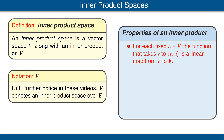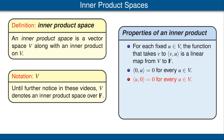Now let's look at some properties of inner product spaces. Suppose we fix a vector u in V; then the function that takes a vector in V to that vector's inner product with u is a linear map from V to F. This linearity follows from additivity and homogeneity in the first slot. Our second property says that the inner product of 0 with any vector in V is 0, which follows immediately from linearity. Our third property says that the inner product of any vector with 0 — now with 0 in the second slot — gives 0. We obtain that result by using the property that interchanging the order gives the complex conjugate, and the complex conjugate of 0 is 0.